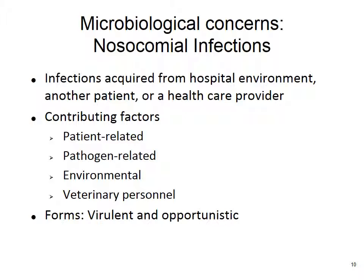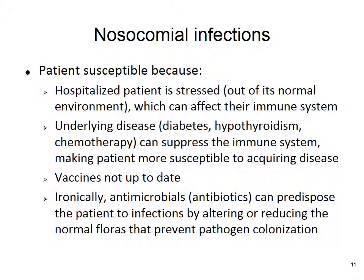There are two forms: virulent infections and opportunistic infections. Patients become susceptible when hospitalized due to stress, which suppresses the immune system. Underlying disease — diabetes, hypothyroidism — or chemotherapy can also suppress immunity. Vaccines not being up to date is another factor. For example, I always vaccinate indoor cats for FVRCP, because if they're stressed and hospitalized with outdated vaccines, they're likely to acquire an upper respiratory infection on top of their existing condition.